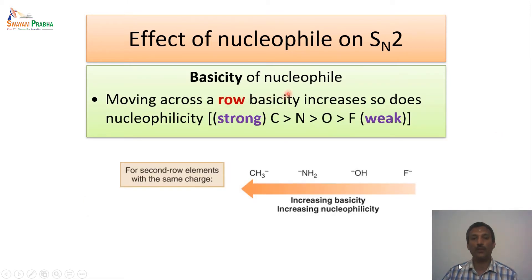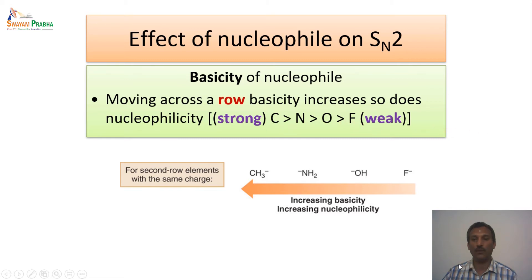When we talk about basicity of the nucleophile, moving across the row, the basicity actually increases, so does the nucleophilicity. So here, as basicity increases, the nucleophilicity also increases. We are only considering the second row elements because organic chemistry mainly deals with carbon, nitrogen, oxygen, and fluoride or the halides. So carbon is a very strong or basic nucleophile, whereas fluoride is a very weak nucleophile.